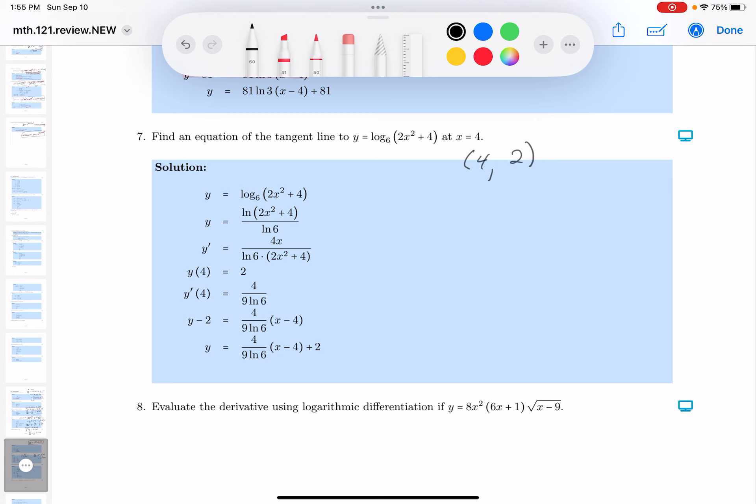I'm going to use a base change formula. So I'm going to write y equals, this is going to be the natural log of 2x squared plus 4 over the natural log of 6. I'm using a base change formula.